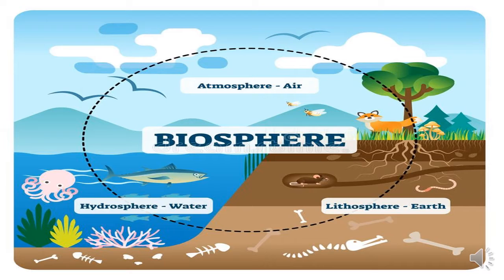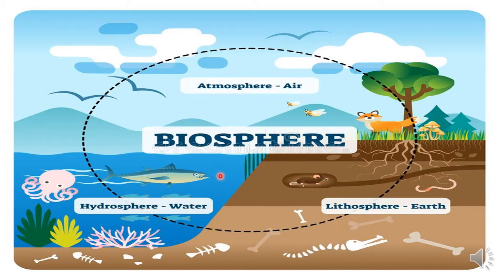Look at the atmosphere — that is air, which comes under abiotic. Hydrosphere means water, lithosphere means earth or land. These three — atmosphere, hydrosphere, and lithosphere — are the three parts of the abiotic natural environment. Together, these three parts form the biosphere.